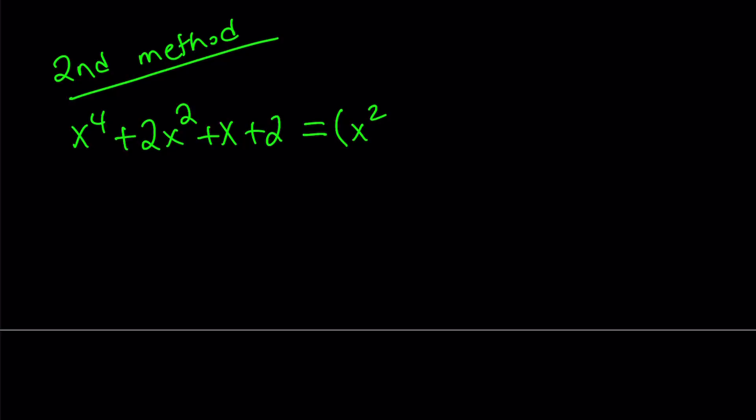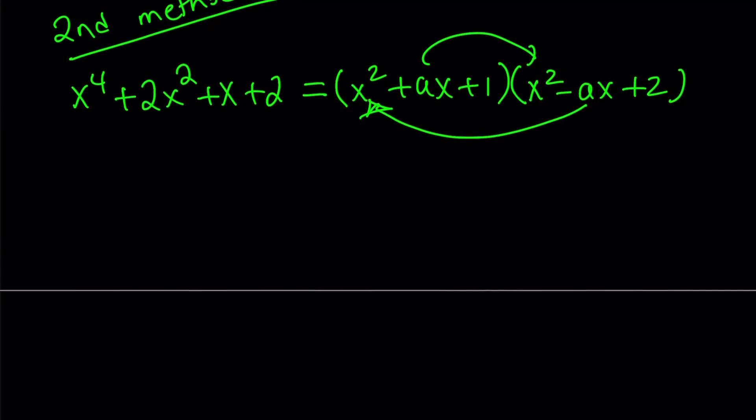This can be written as x squared plus ax plus 1 times x squared minus ax plus 2. Now, the reason why I use a plus ax and minus ax is because when I distribute here and here, I'm going to get the x cubed term cancel out. That's why I'm able to pick my factors that way. Either this method is going to work or, of course, I can at the same time have a negative 1 and negative 2 instead of the positive 1 and positive 2.